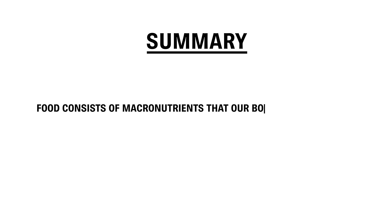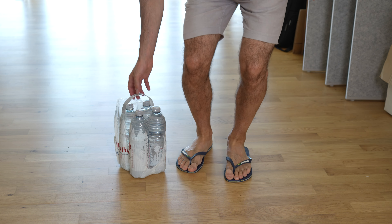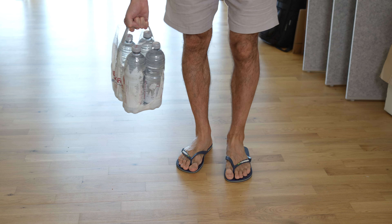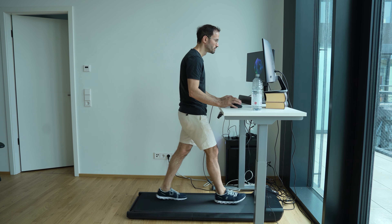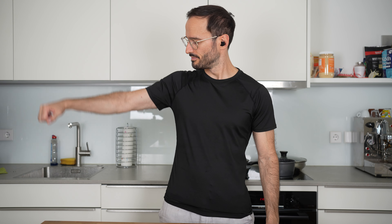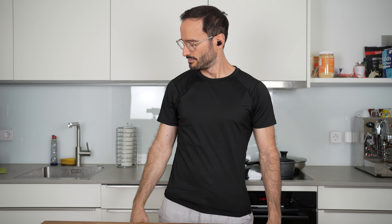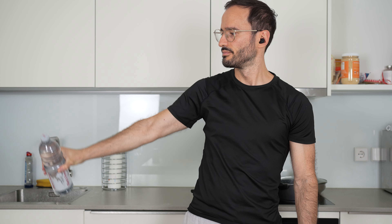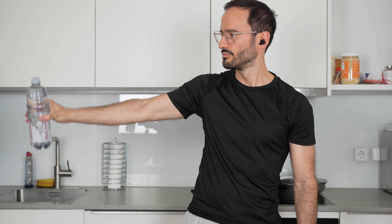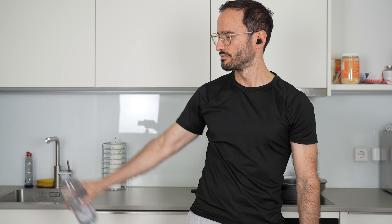Food consists of macronutrients that provide energy in the form of calories our body can use. Every physiological function of our body needs a certain amount of energy — simply thinking about something, maintaining body temperature, or moving a body part. For example, raising your arms requires your deltoid muscles to contract, and those contractions need energy. The heavier your arm is, the more energy is required to raise it — which is why heavier people need more energy than smaller people even doing the exact same movement.